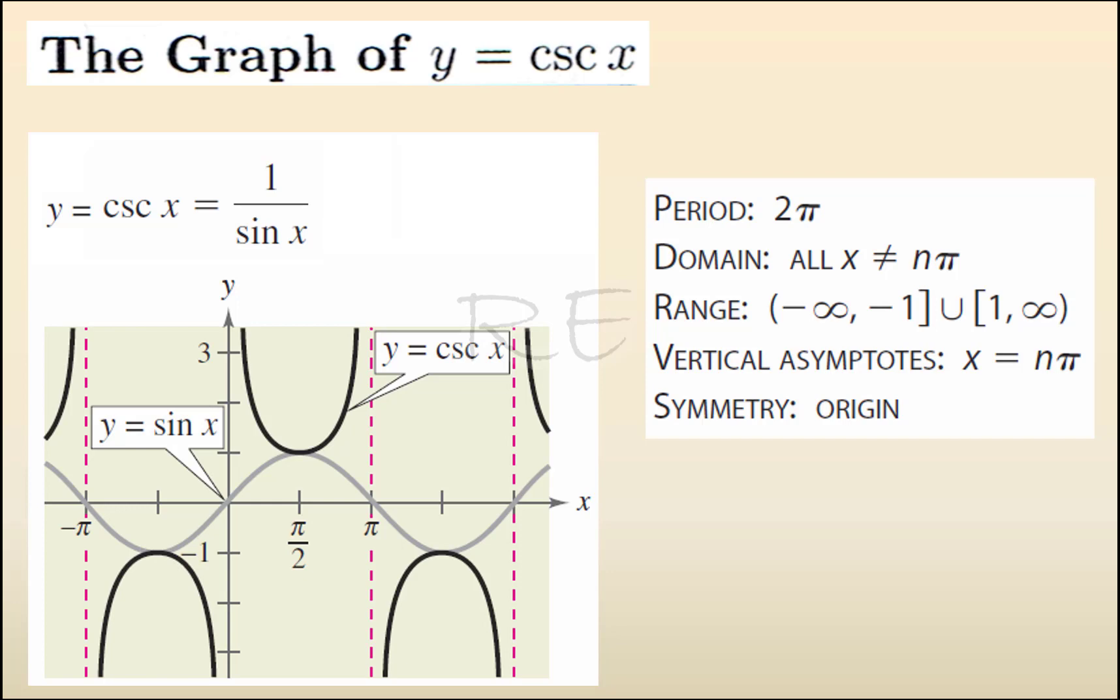For y equals cosecant x, the period is 2π. The domain is all x different from kπ. The range is from negative infinity to negative 1 included, union, 1 included to positive infinity. Vertical asymptotes, x equals kπ, and symmetry about the origin.